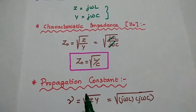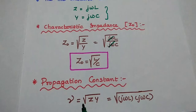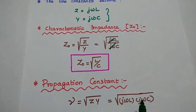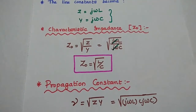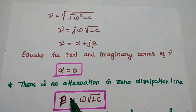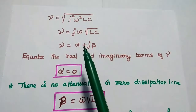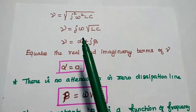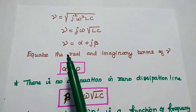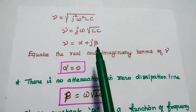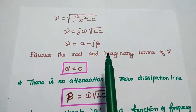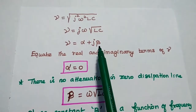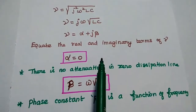The next one is the propagation constant, represented as gamma, equal to the square root of Z into Y. Here Z is j omega L and Y is j omega C. Multiplying these two values, we get gamma equal to the square root of j squared omega squared LC. Taking j omega outside from the square root, gamma equals j omega into square root of LC. Since gamma equals alpha plus j beta, we equate the real and imaginary terms.